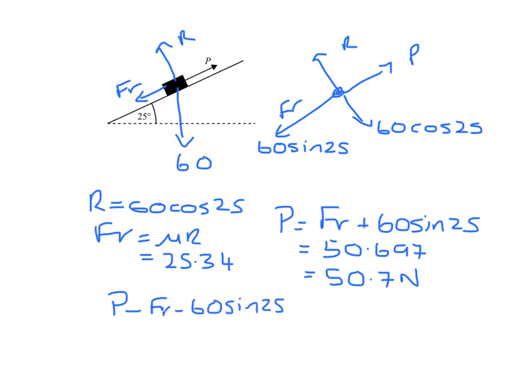And if I substitute in the value for friction of 25.34, that gives me P to be 6 times 3.5 plus 60 sine 25 plus 25.34, which is 71.697, so that's 71.7 newtons.